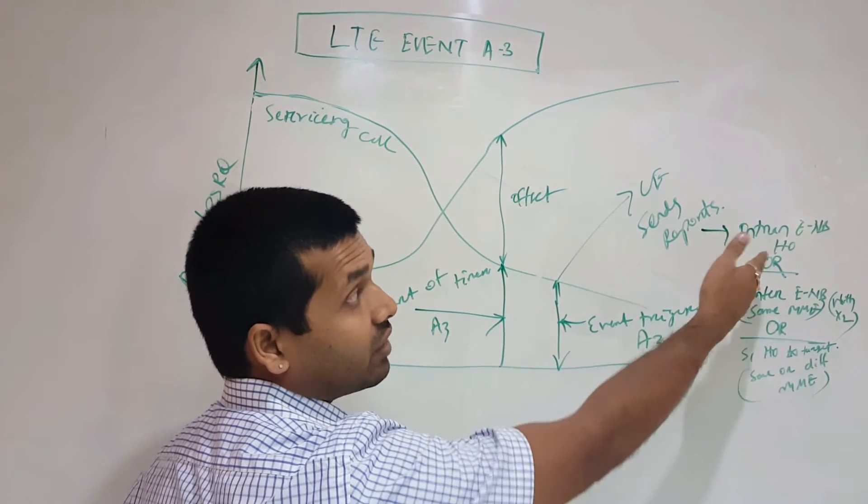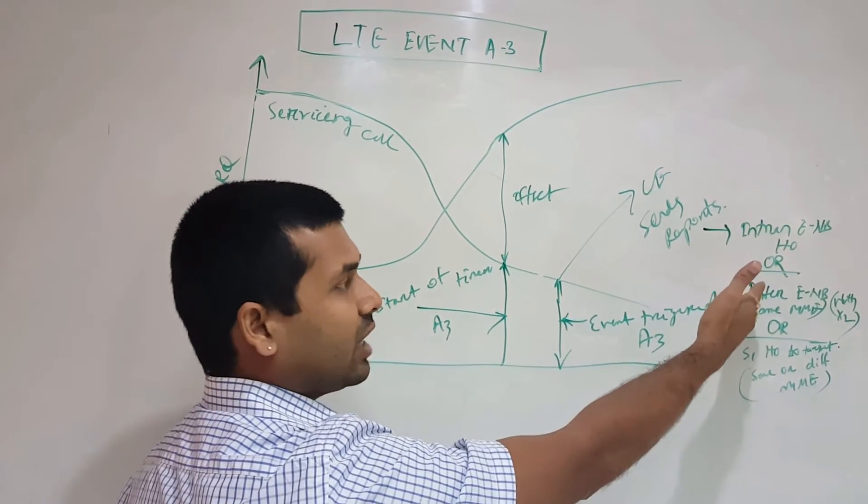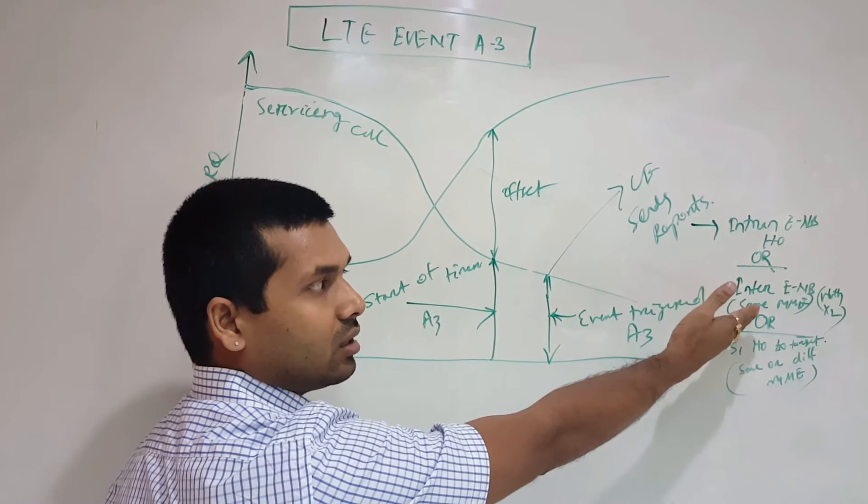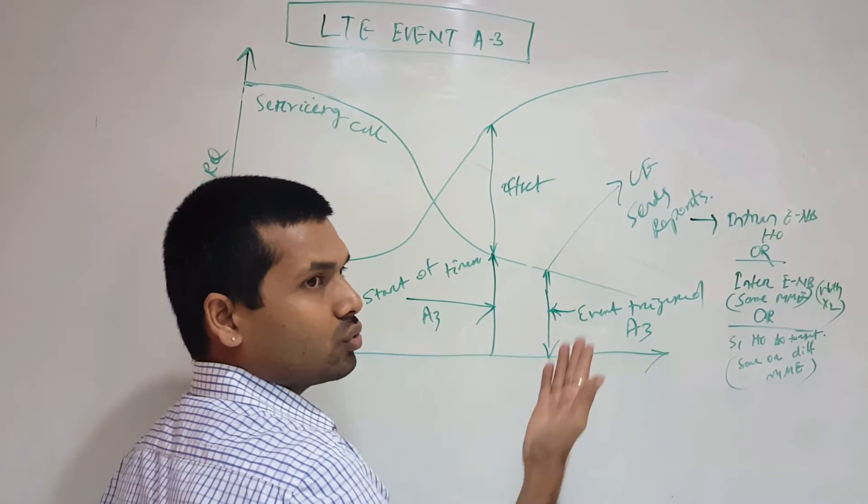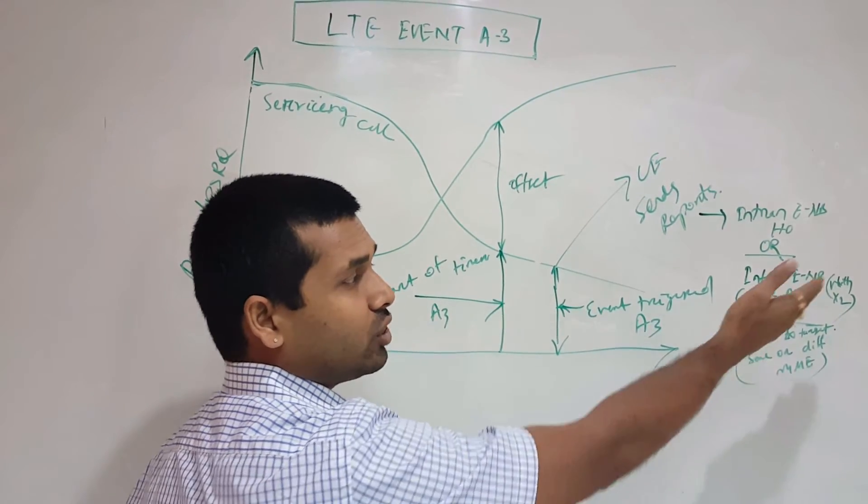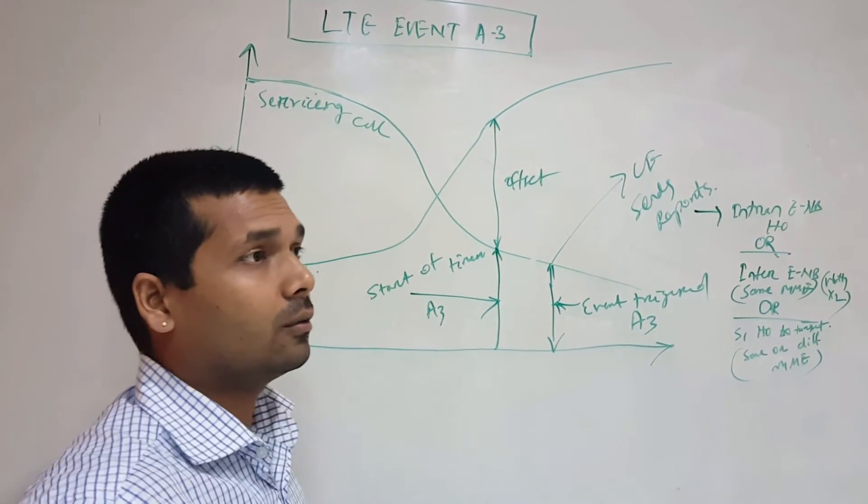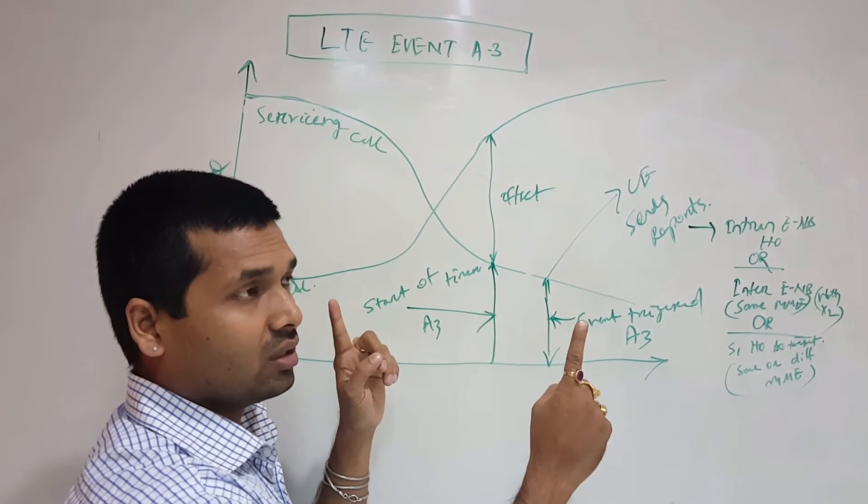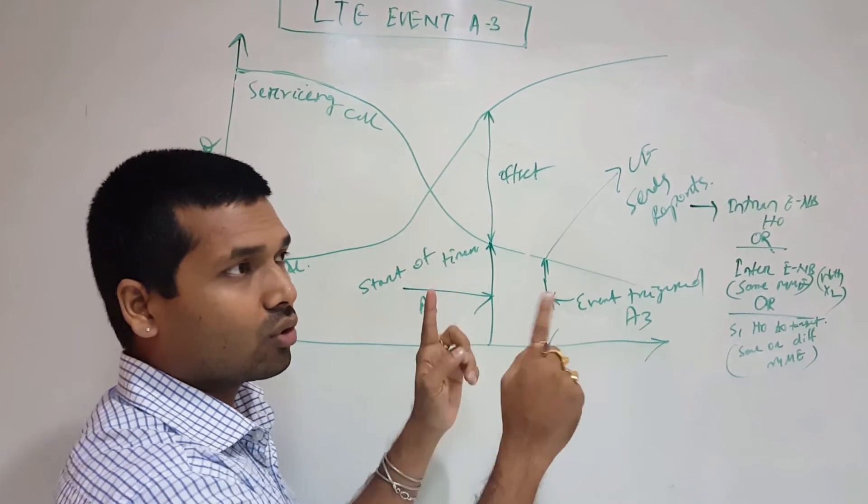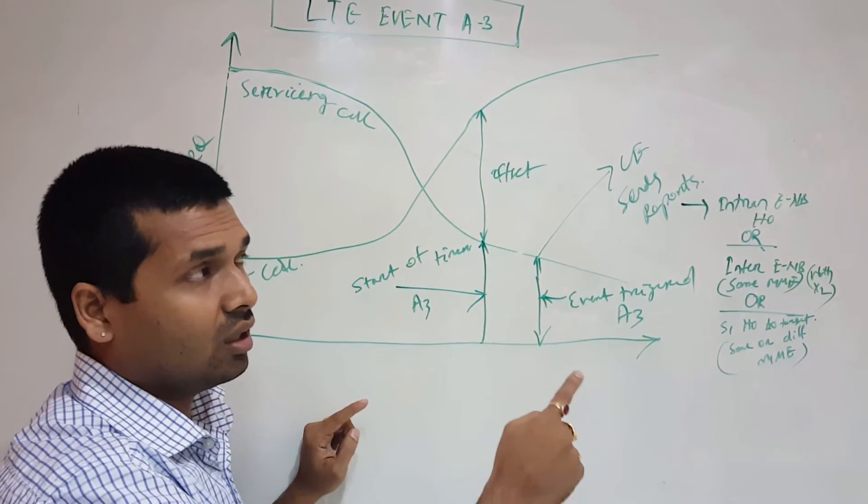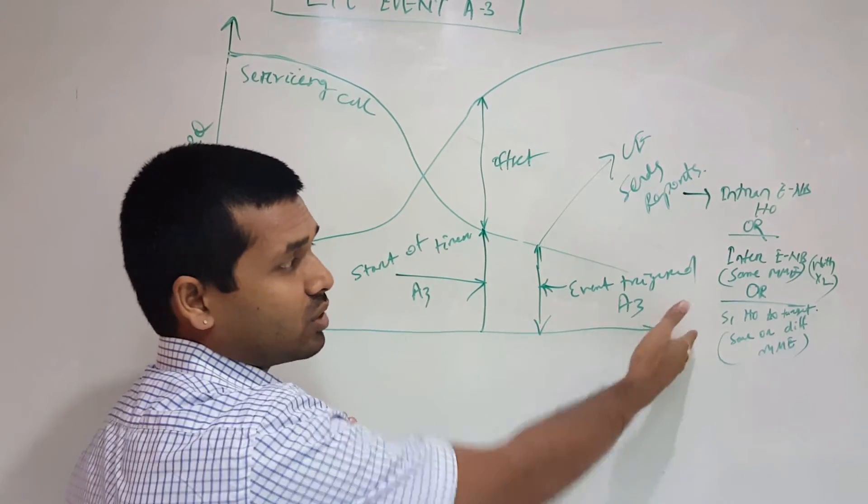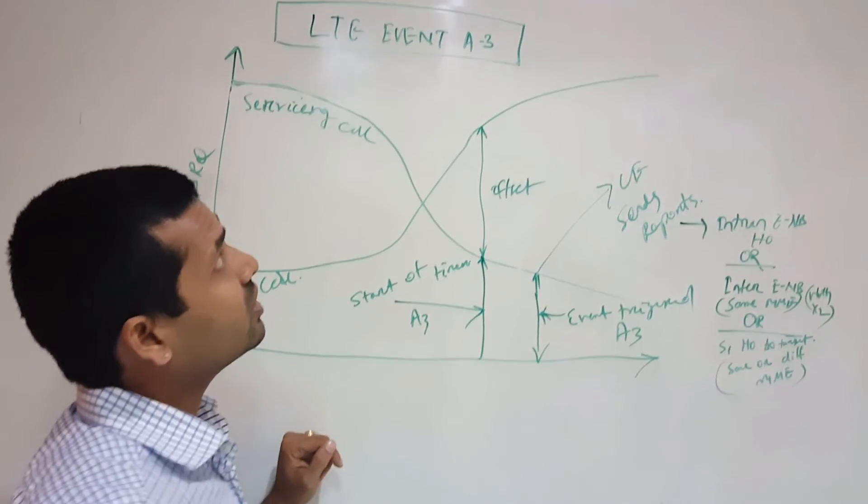We have intra-eNodeB handover, meaning between the same sectors of one eNodeB. Or we may have X2 handover to other eNodeBs. If we don't have X2 interface between the target eNodeB and source eNodeB, we can make an S1 handover via MME. We can also do handover to other pool MMEs through S1 interface. That's all about the A3 event.